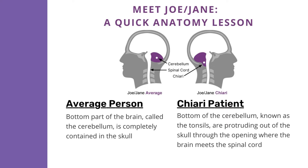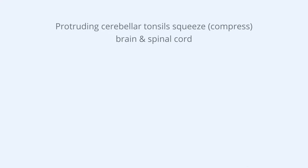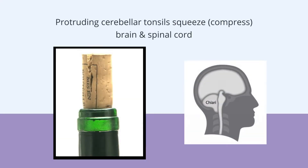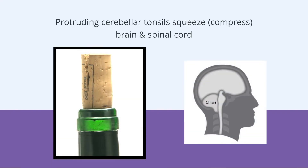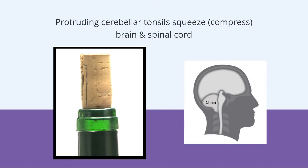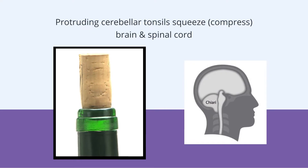However, in a person with Chiari, the very bottom of the cerebellum, known as the tonsils, are protruding out of the skull through the opening where the brain meets the spinal cord. Like a cork being jammed into a wine bottle, this protrusion then squeezes or compresses these parts together.